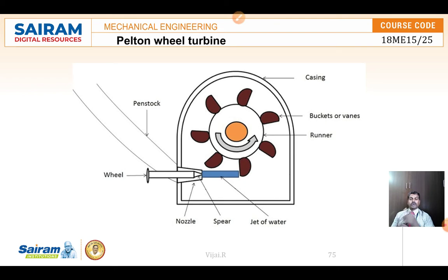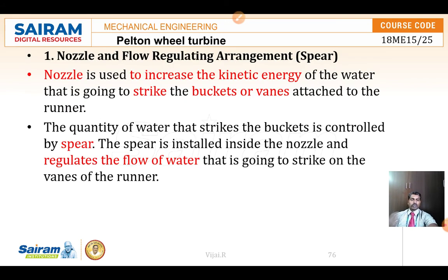The buckets receive the kinetic energy of the water and start to rotate. When the runner rotates, the shaft is also rotated. All the parts are covered with a casing. The casing helps to avoid the splashing of water.